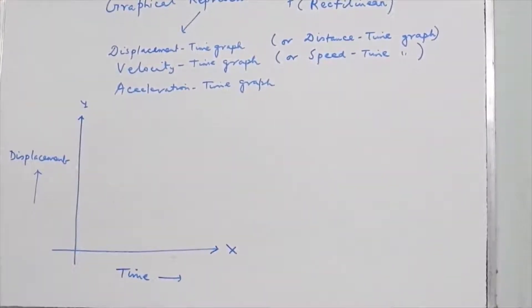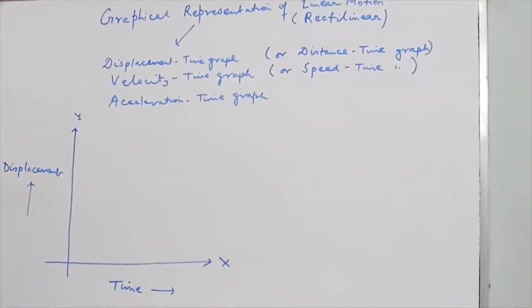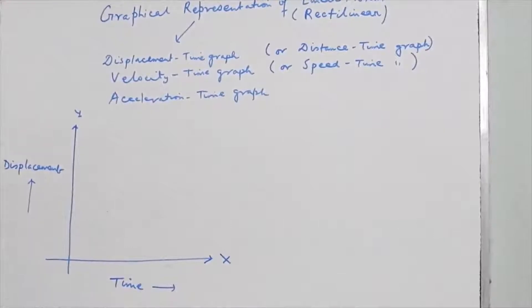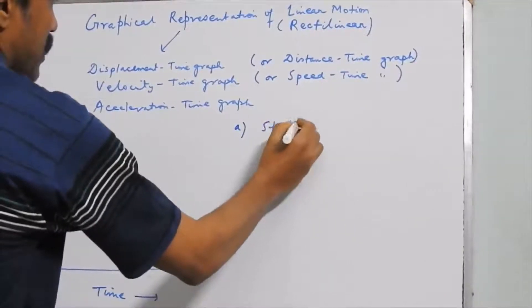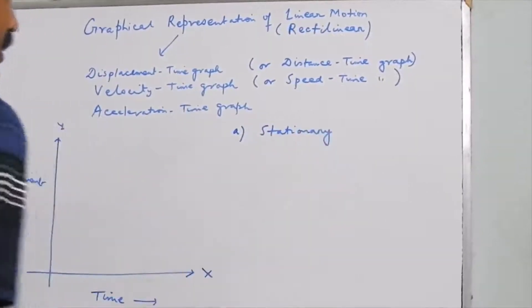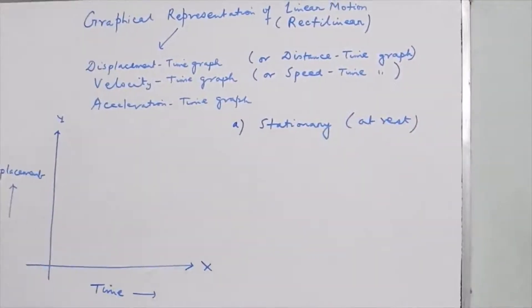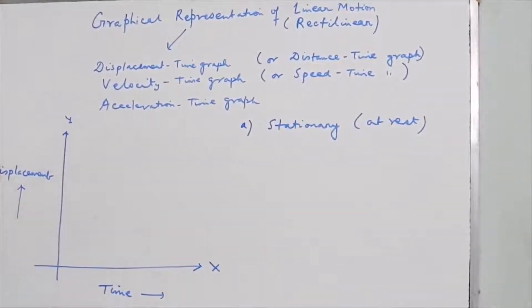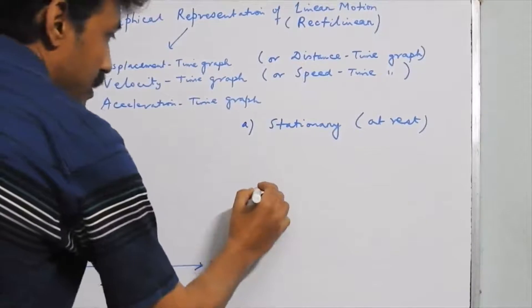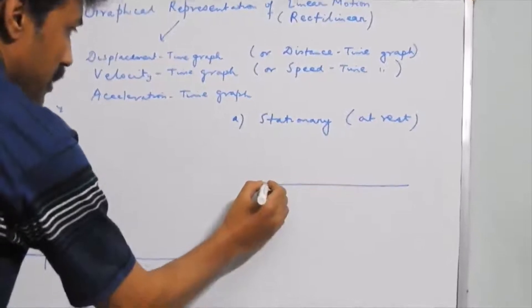In the motion of a body along a straight line, there are different situations to discuss for each graph. The first example: suppose the body is stationary — the body is at rest, not moving at all. It means that at different instances of time, the body is at the same position and has not changed its position. The cutting point is the point O.